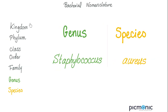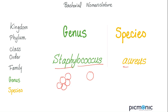From biology, we classify organisms as: Kingdom, Phylum, Class, Order, Family, Genus, Species. The genus and species form the two-word name. So when I say Staph aureus, the genus is Staphylococcus and the species is Aureus. We call it coccus because it is spherical; Staph because they cluster like grapes; and Aureus because it means gold. In medicine, gold is Aureus and silver is Argenta.